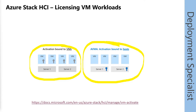The automatic virtual machine activation is bound to the hosts. This means if a virtual machine moves to another host, you have to ensure that there's also a key provided for automatic virtual machine activation, or the virtual machine will show an information that it's not licensed accordingly.